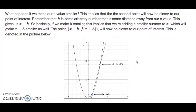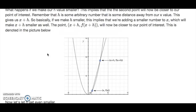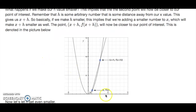What happens if we make our h value smaller? This implies the second point will now be closer to our point of interest. Since h is some arbitrary number added to x to give x+h, making h smaller means x+h gets smaller as well. As a result, the point (x+h, f(x+h)) will now be closer to our point of interest while still remaining on the curve.